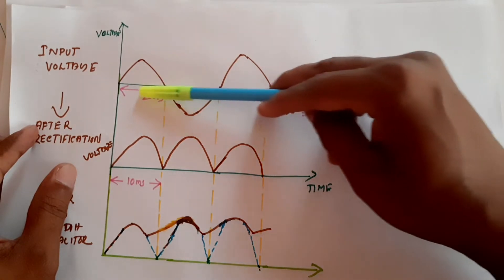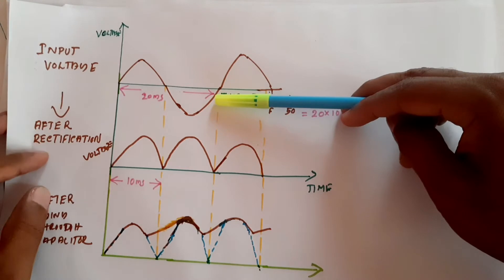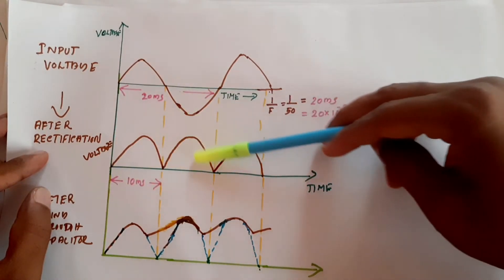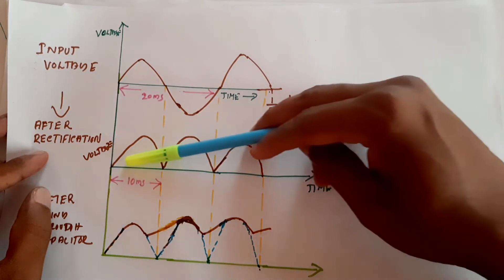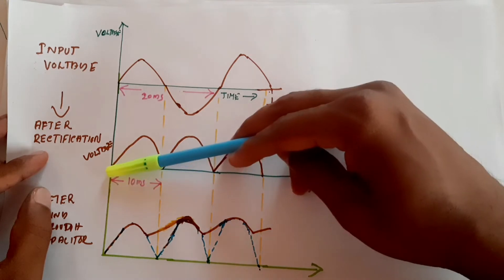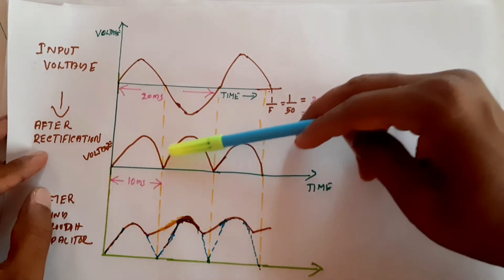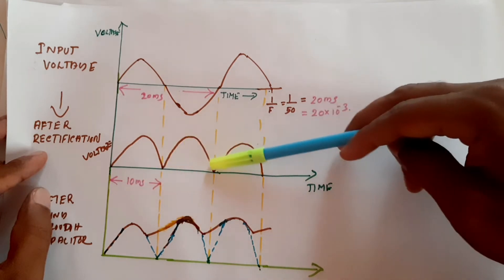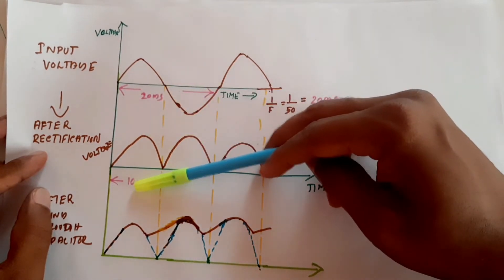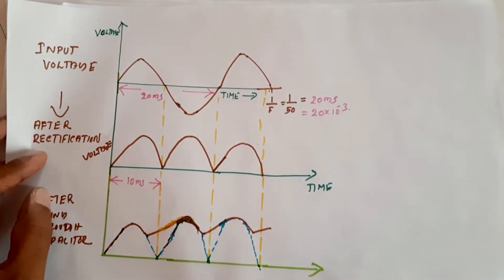After passing through the bridge rectifier, the negative half of the waveform is inverted to the same direction. This means the time repetition period changes from 20 milliseconds to only 10 milliseconds — the waveform now repeats every 10 milliseconds.